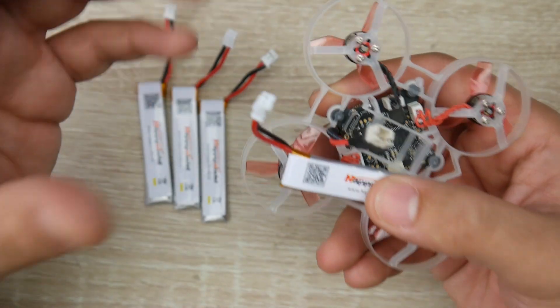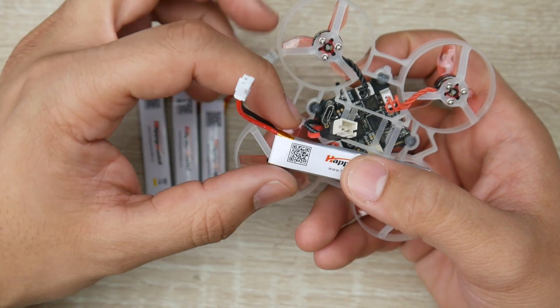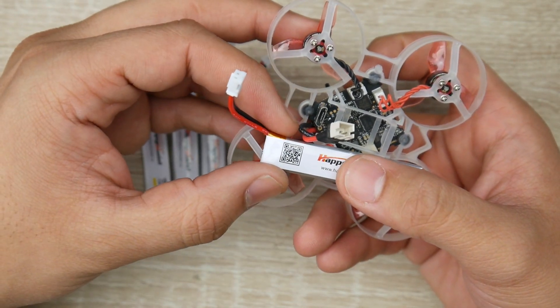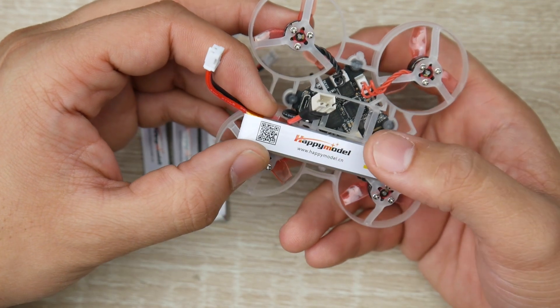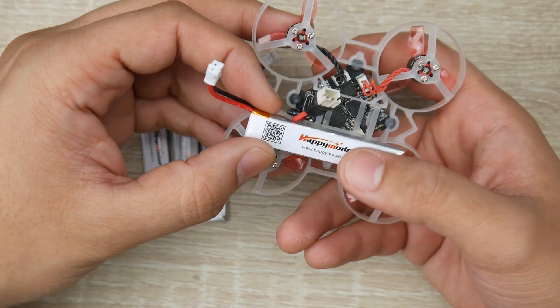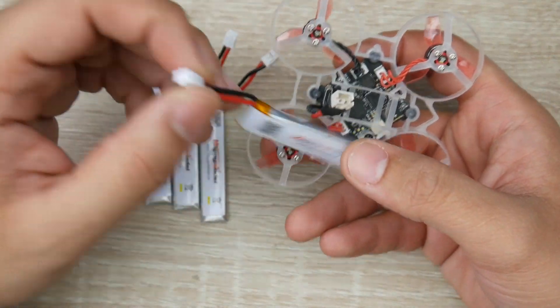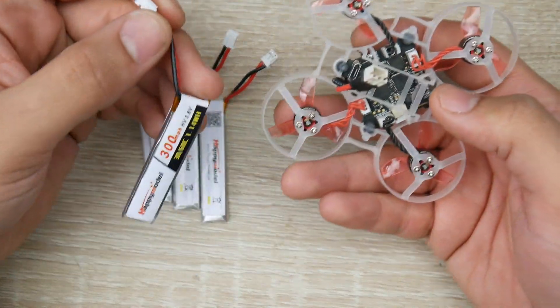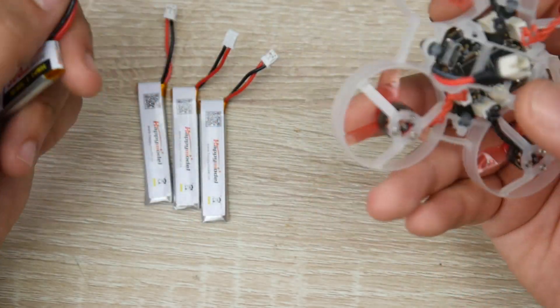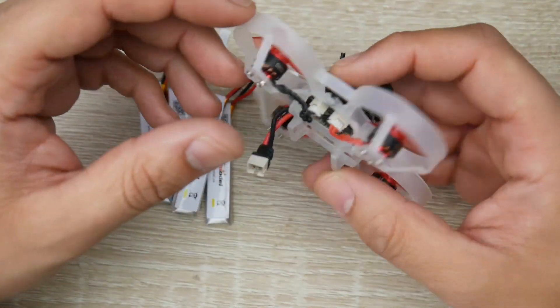Now another great thing that a lot of people might overlook is the fact that they did not go the proprietary route, kind of like the E-max Tiny Hawk or Baby Hawk that has these special batteries and a special type of connector. This just makes everything so much more universal, so much easier to find parts, and just all around a lot better.